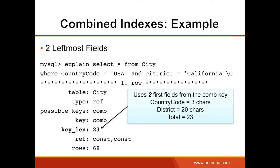As we see, two fields are used here: country_code and district. And the next example shows that MySQL can use three leftmost fields out of our combined index. We can do country_code = 'USA', district = 'California', and population > 10000. MySQL uses the combined index with key_length 27, and simple math shows all three fields are used. So this is very efficient.